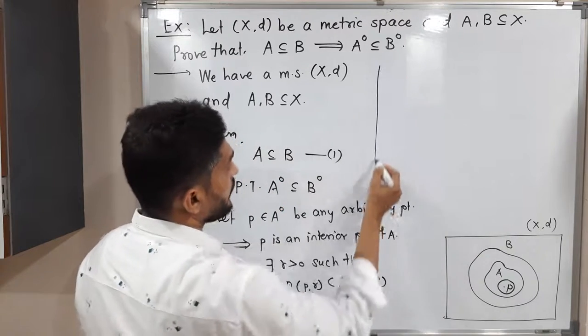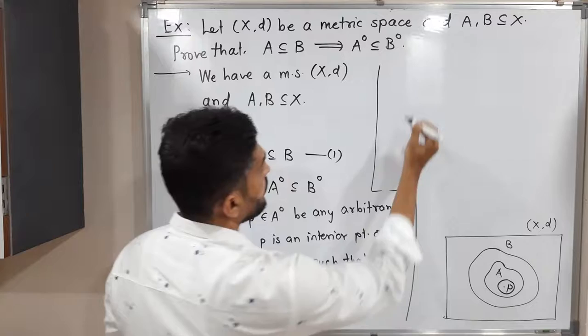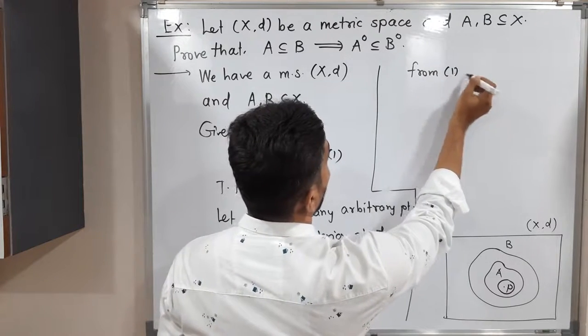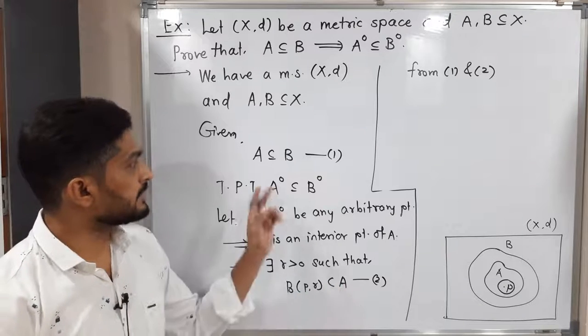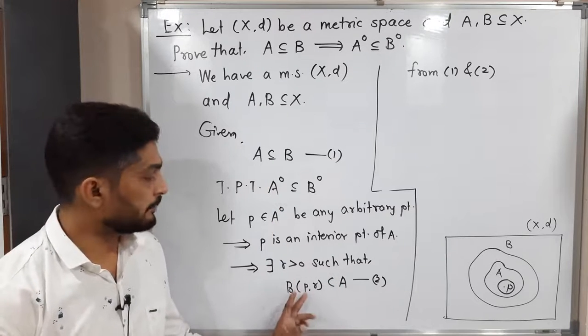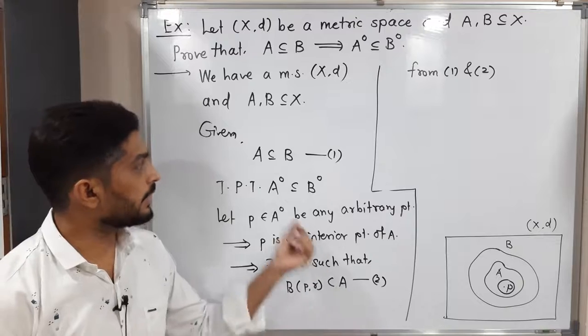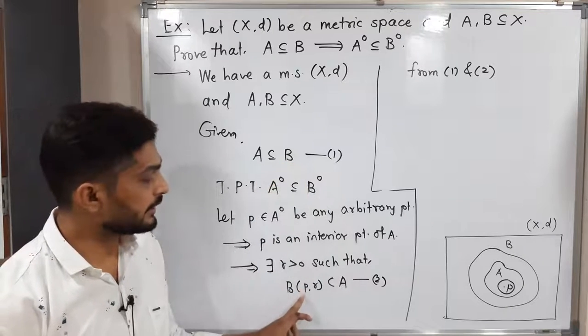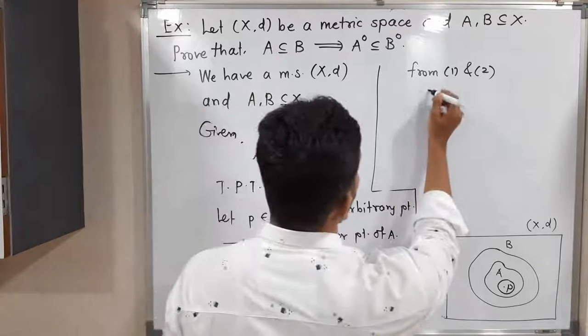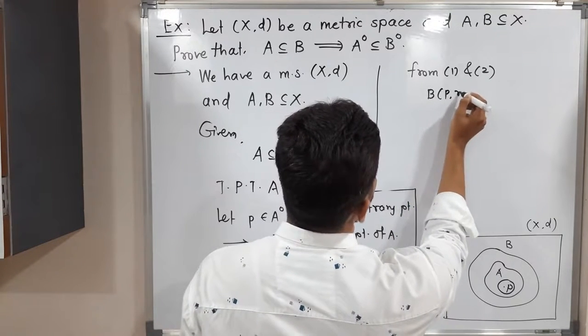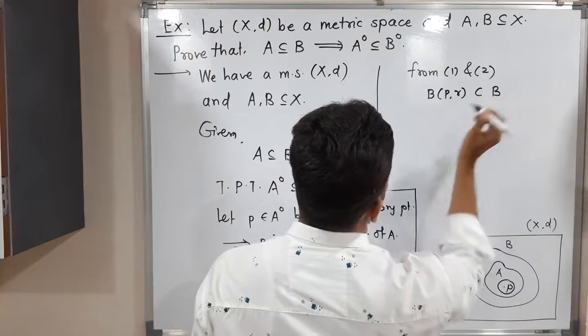So what can we write from (1) and (2)? From (1) and (2), we have A ⊆ B. This open ball is a subset of A and A is a subset of B. So directly we can say this open ball is a subset of B. From (1) and (2), B(P,r) ⊆ B.